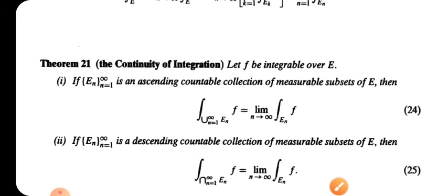Now we have Theorem 21: the continuity of integration. Let F be integrable over E. If the collection E_n, n equal to 1 to infinity, is an ascending countable collection of measurable subsets of E, then the integral over the union from n equal to 1 to infinity of E_n of F equals the limit as n tends to infinity of the integral of F over E_n. And if the collection E_n is a descending countable collection of measurable subsets of E, then the integral of F over the intersection from n equal to 1 to infinity.